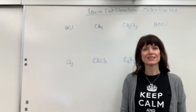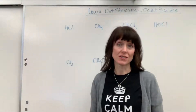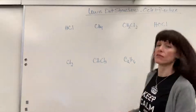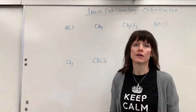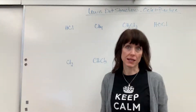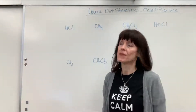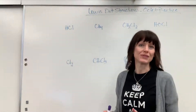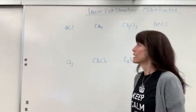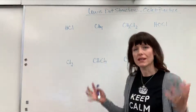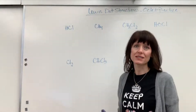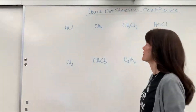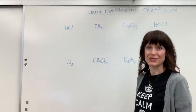We're going to do some Lewis dot structure practice. All of the examples I've chosen are going to be very straightforward octet practice, where we don't have any exceptions and we're not using coordinate covalent bonds. This is just getting you used to the basics of covalent bonding and drawing Lewis dot structures.